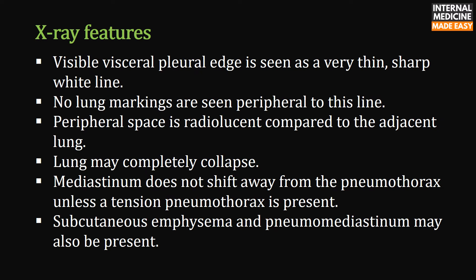X-ray features: the visible visceral pleural edge is seen as a very thin, sharp white line. No lung markings are seen peripheral to this line. The peripheral space is radiolucent compared to the adjacent lung. The lung may completely collapse. The mediastinum does not shift away from the pneumothorax unless a tension pneumothorax is present. Subcutaneous emphysema and pneumomediastinum may also be present.